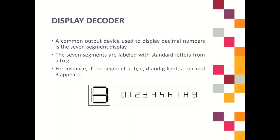We continue on our last subtopic in chapter 6, which is Display Decoder. A common output device used to display the symbol number is a 7-segment display. This 7-segment display is labeled with standard letters from A to G.